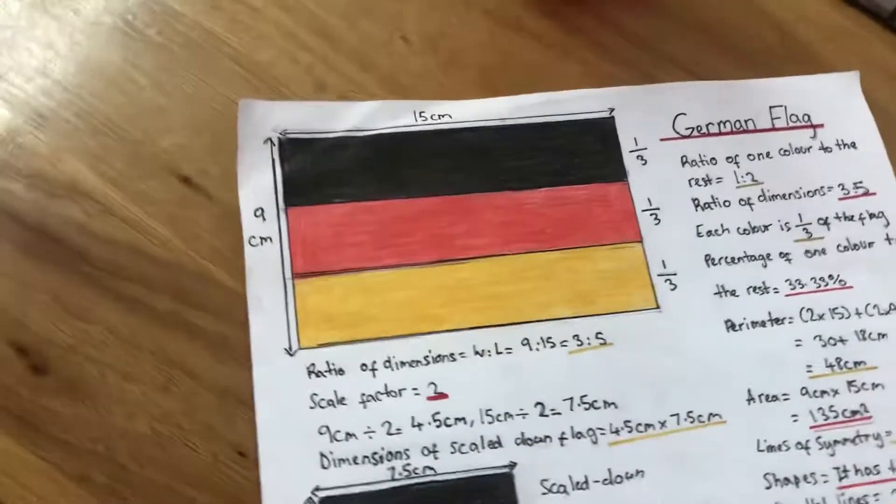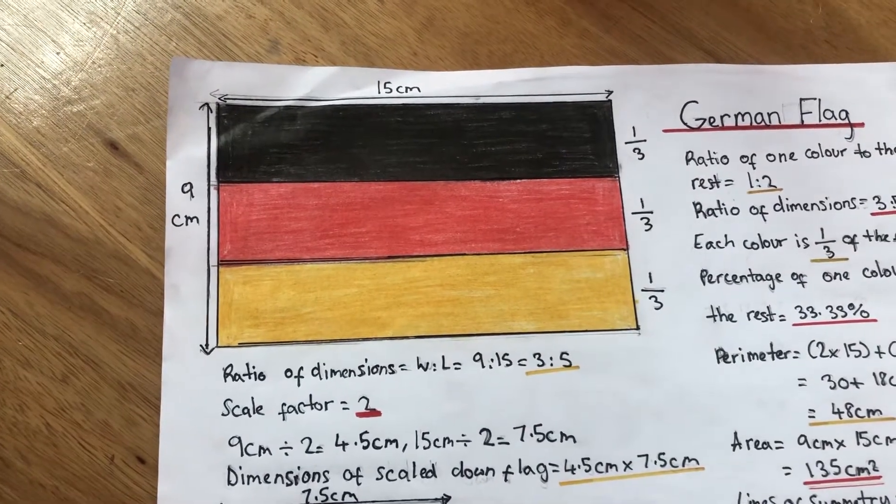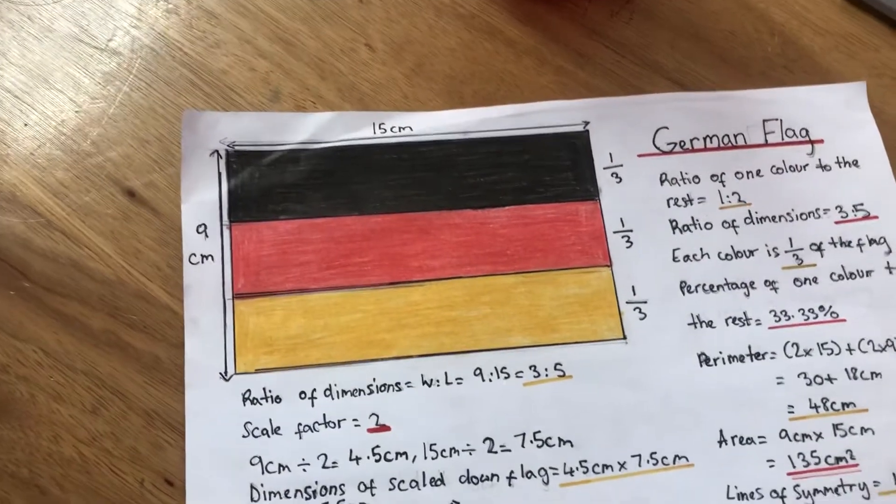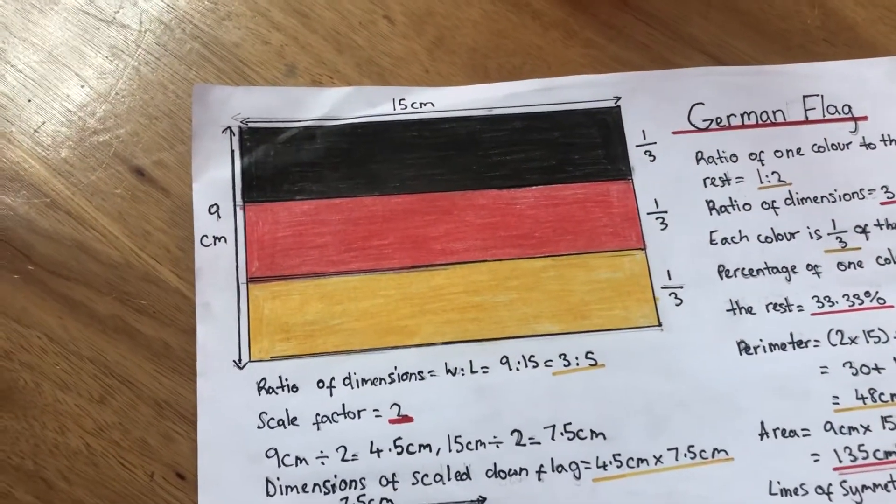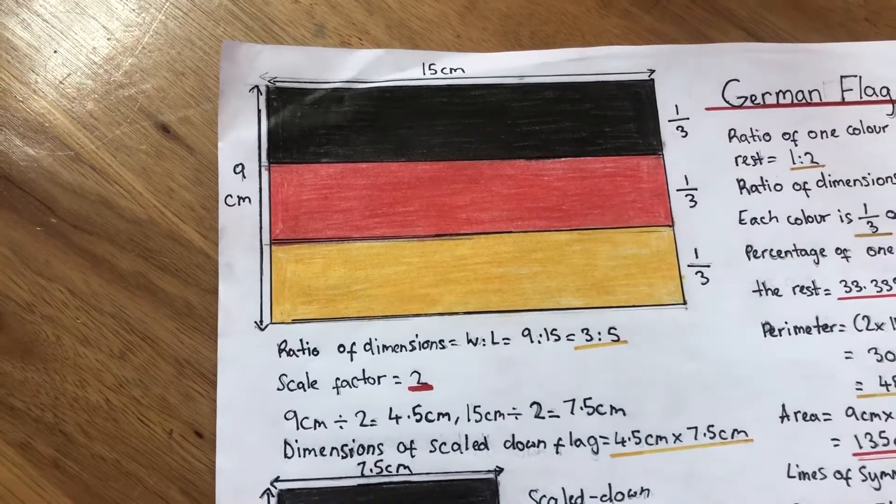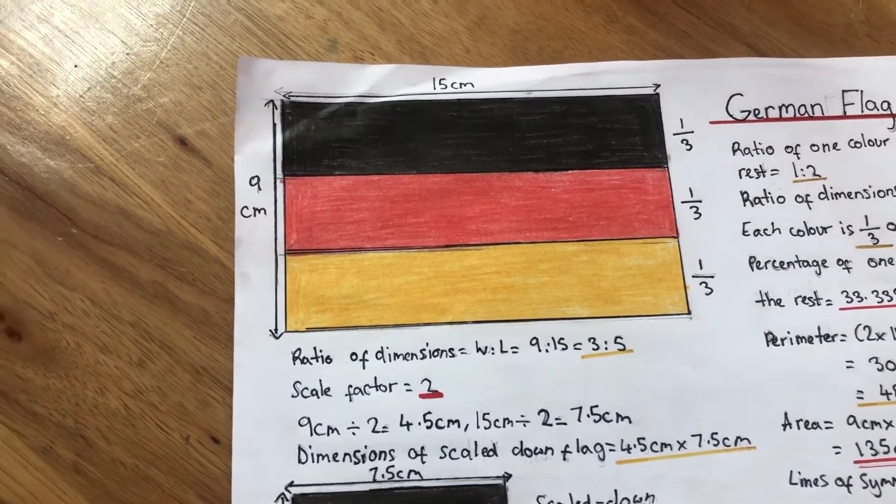This is the flag of Germany. Okay. And I'll be talking about the area. So the dimensions are 9 centimeters to 15 centimeters. And to get the area, we have to multiply these together. So 15 centimeters times 9 centimeters is 135 centimeters. So the area is 135 centimeters. Excellent! Alright, thank you. What have we got next?